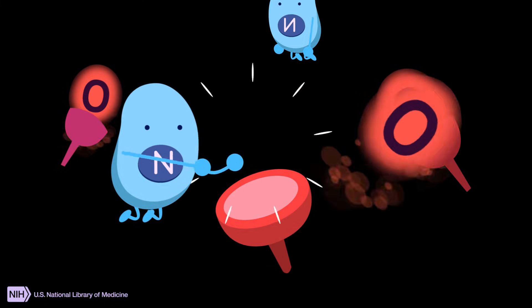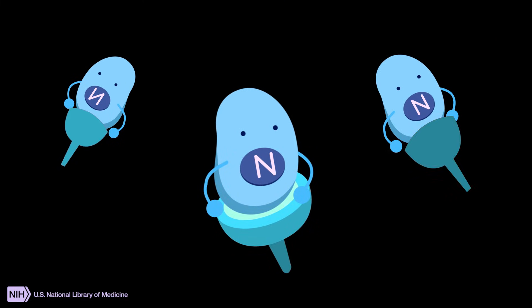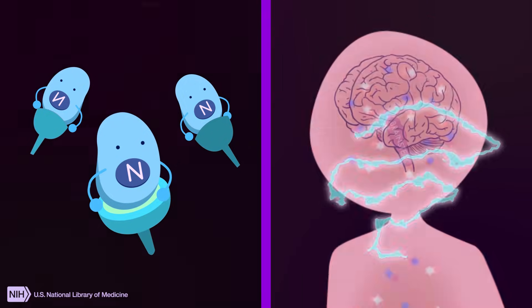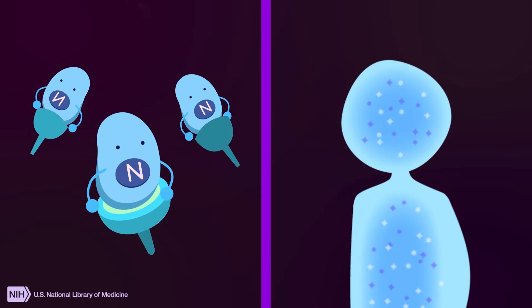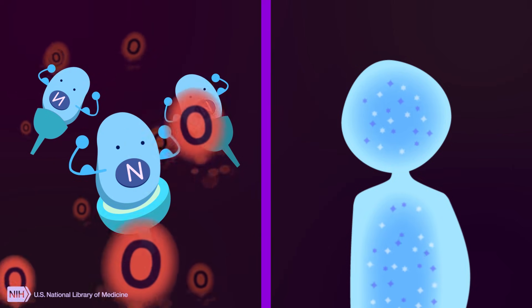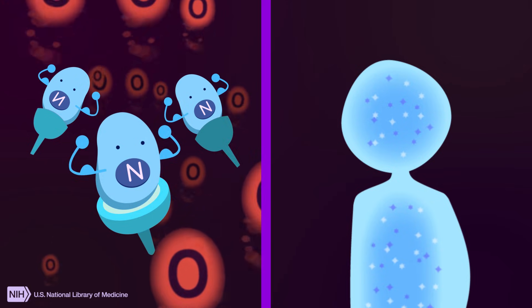Naloxone knocks opioids off their receptors all around the body. In the brainstem, naloxone can restore the drive to breathe and save a life. But even if naloxone is successful, opioids are still floating around, so expert medical care should be sought as soon as possible.